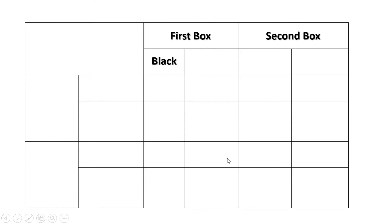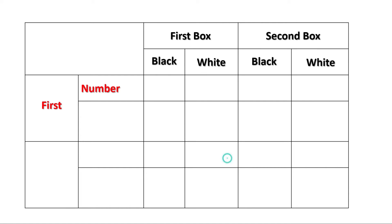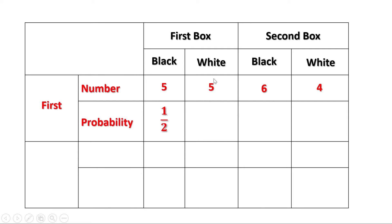There are two boxes and two types of beads — black and white. In the first situation, the number of black beads in the first box was 5 and white beads was also 5. In the second box there were 6 black and 4 white beads. The probability of getting a black bead from the first box is number of black beads divided by total beads — that is 5 by 10, or 1 by 2. Similarly, probability of getting a white bead is also 5 by 10 or 1 by 2.